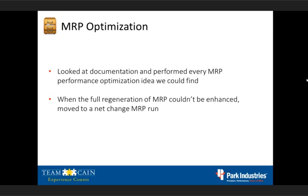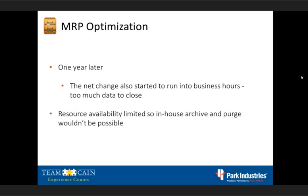We finally ran into the realization that we can't continue to run full MRP every night. At that point we started running full MRP only on the weekend and ran the net change during the week. Which was okay, but our schedulers did not like that very much because the full MRP gives them just a little bit more than what the net change does. So that was not the solution everybody wanted — it was a band-aid. We still needed to find something so that we could run full MRP every night.